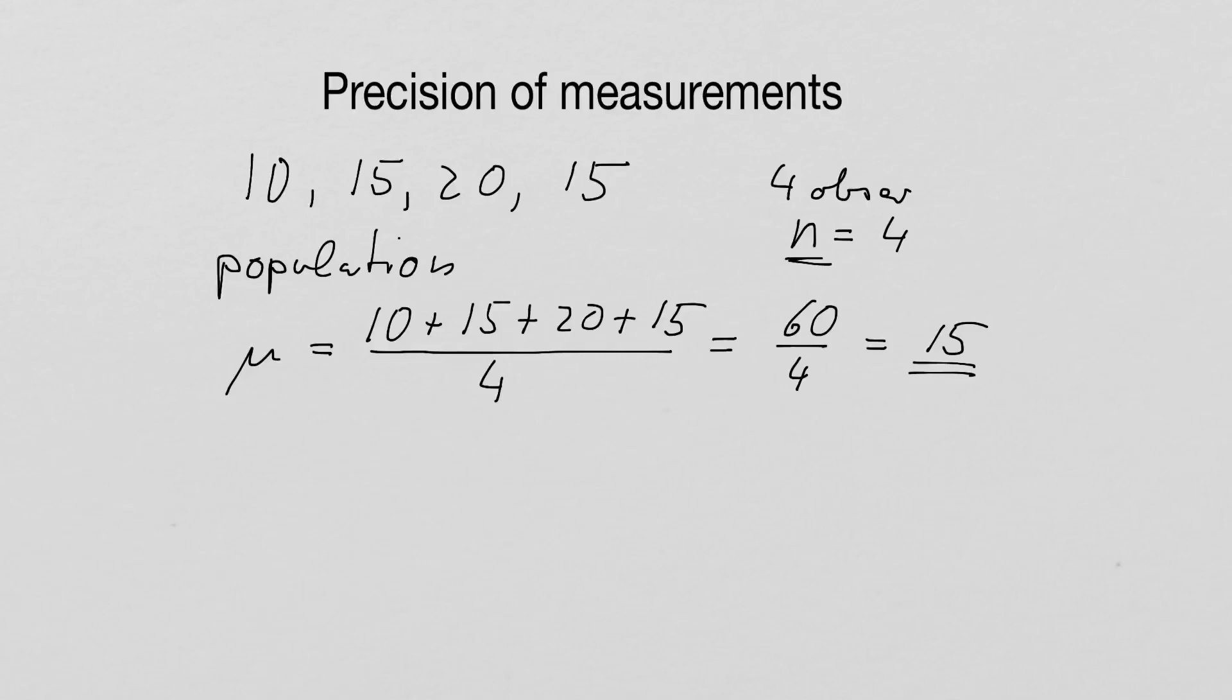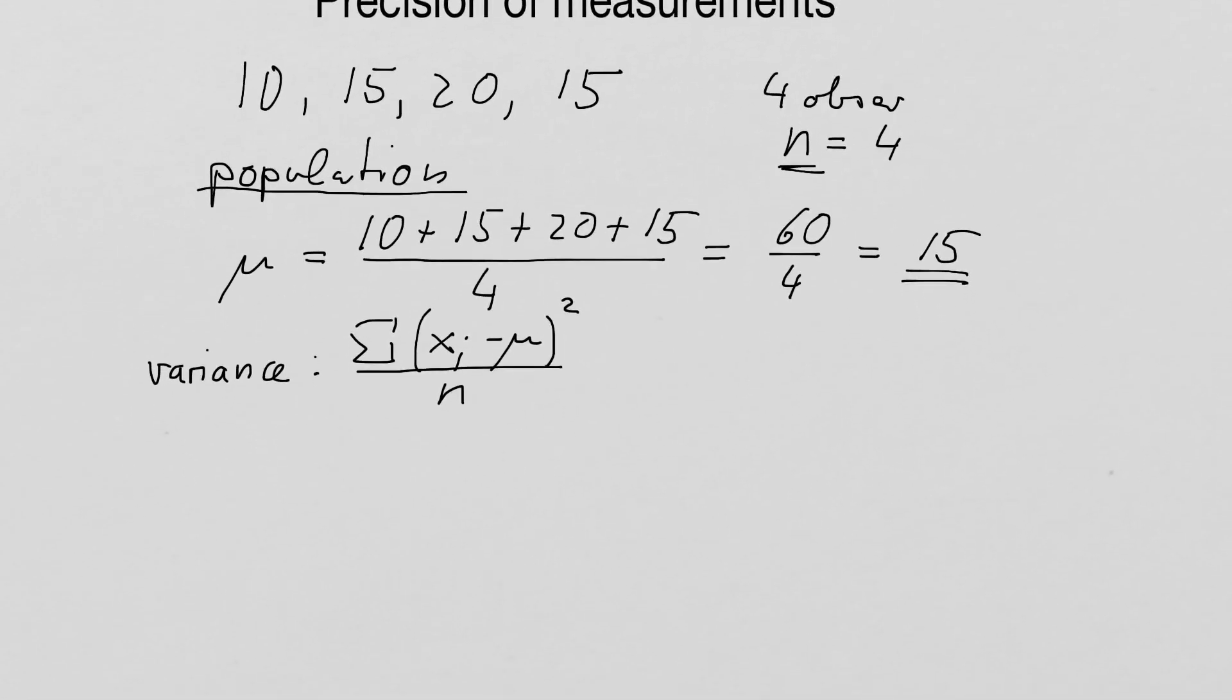What we can do now is also look at the spread, how much are our data spread out, and for that we can calculate what is called the variance. And we use again an equation that is for the population. This equation looks in mathematical form like that. We take the sum of each observation minus the mean, square it, and divide it by the number of our observations. Now this looks a little bit scary, but what it basically says is add up the differences.